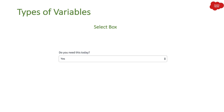Then we have Select Box, which is similar to the choice field where you can add different choices and the user selects one. It is similar to Multiple Choice, but Multiple Choice displays radio buttons whereas Select Box displays a dropdown select box.